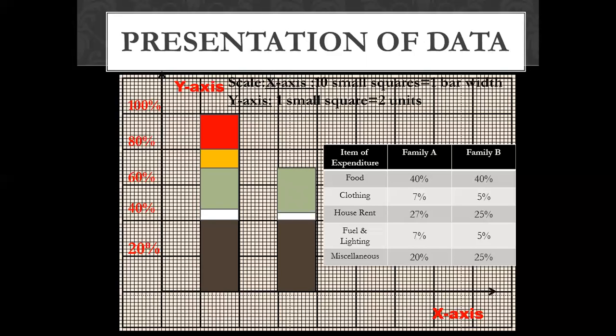Next, 5% is 2.5 small scales — approximately 3 small scales. Then 25% is the next segment. This completes the 100% bar with all values shown.